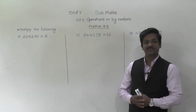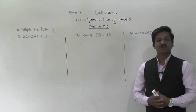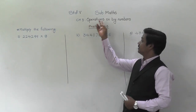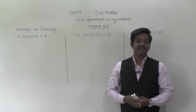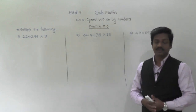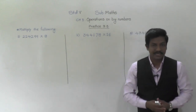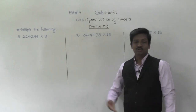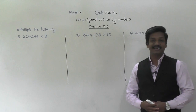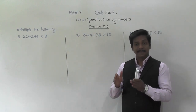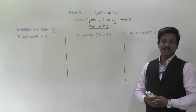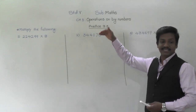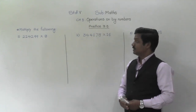Hello everyone, welcome to today's video lecture of maths. In today's lecture we are going to start the next operation in Chapter 3: Operations on Big Numbers. So before this, we have learned addition and subtraction of numbers beyond six digits. Now two operations remain: multiplication and division. We are going to start with the multiplication of big numbers — Practice 3.5, which is based on multiplication.